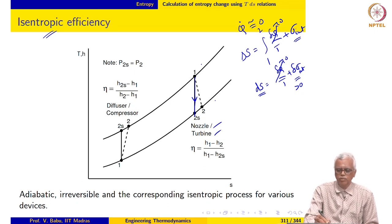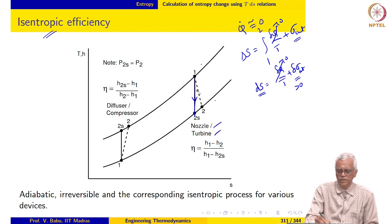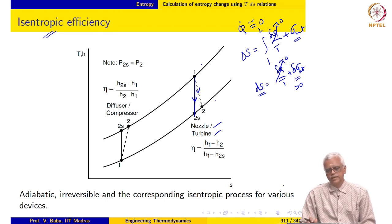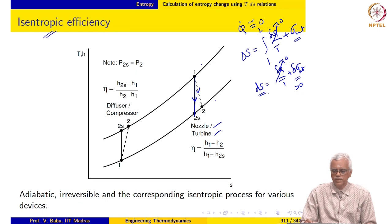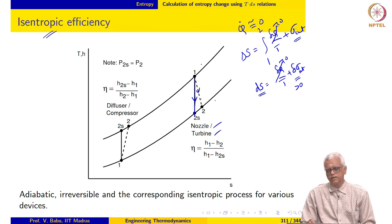This means the state point, starting from 1, keeps shifting to the right as entropy increases. That is why the actual process lies to the right of the isentropic process on the T-S diagram, because entropy increases continuously. We have indicated the irreversible process using a dashed line.